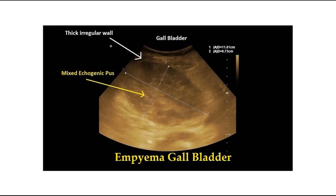This picture shows gallbladder empyema seen on ultrasound, showing thick irregular wall of the gallbladder and mixed echogenic pus.